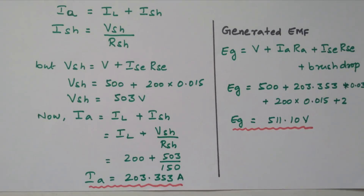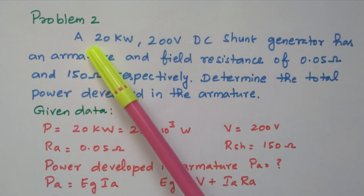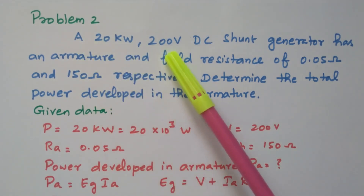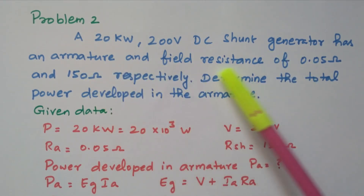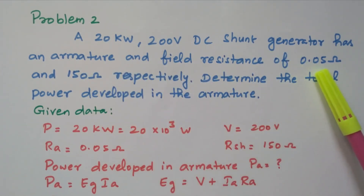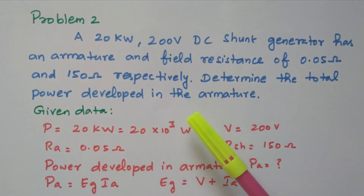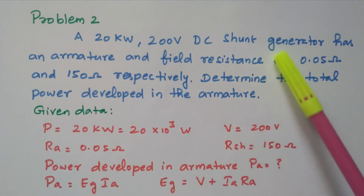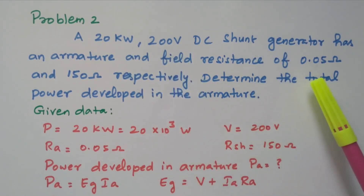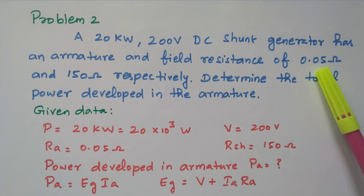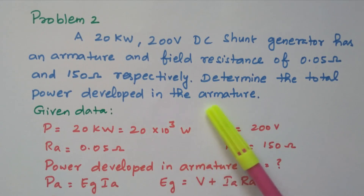Now we will go to the second problem. A 20 kW, 200 volt DC shunt generator has an armature resistance of 0.05 ohm and field resistance of 150 ohm respectively. Determine the total power developed in the armature.